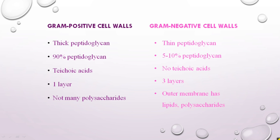In this slide we can see the various differentiating features of gram positive and gram negative cell walls. In a gram positive cell wall the peptidoglycan is a thick layer, whereas in a gram negative cell wall it is a thin peptidoglycan — 90% of the cell wall is made up of peptidoglycan in gram positive, whereas it is only 5 to 10% in gram negative. Another component present in gram positive is teichoic acid, whereas gram negative lacks teichoic acid but has an outer membrane with polysaccharides.